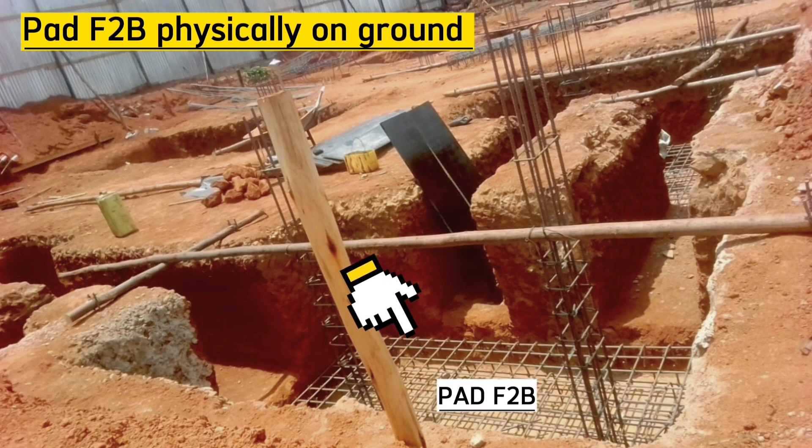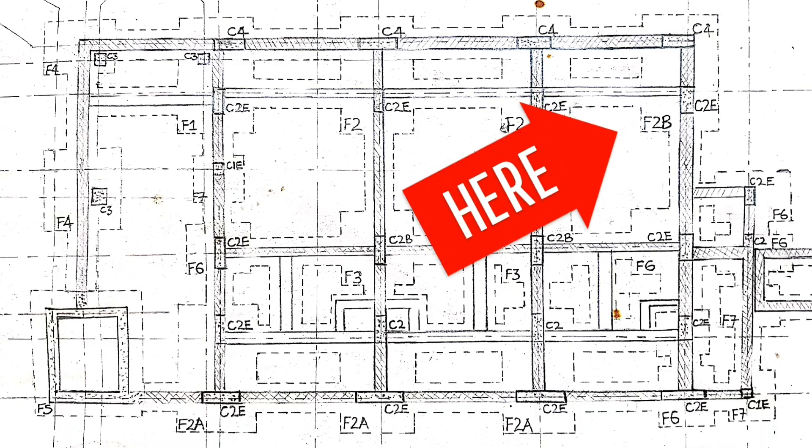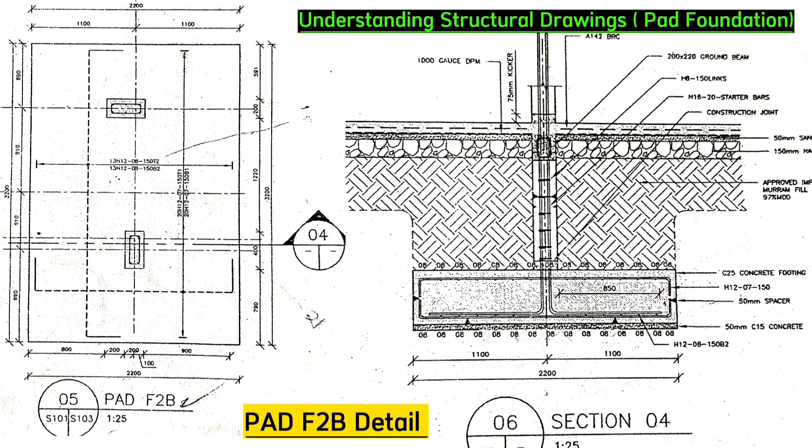This is pad F2B with column C4 here, and this is column C2E here. This is its location at the extreme corner here. Let's take a look at its details in the section. This is section 4 for pad F2B.